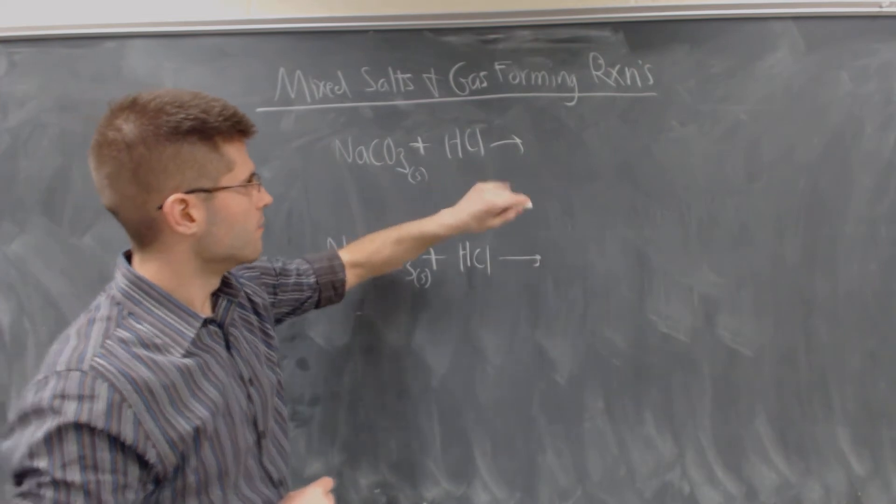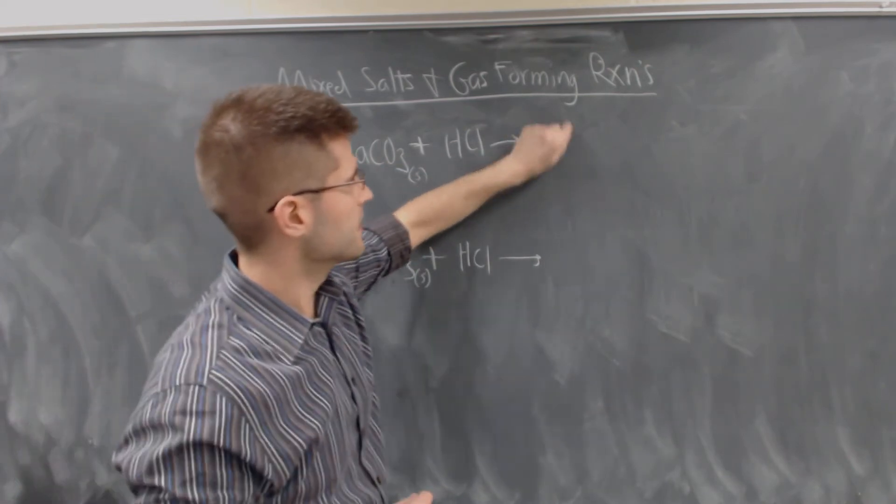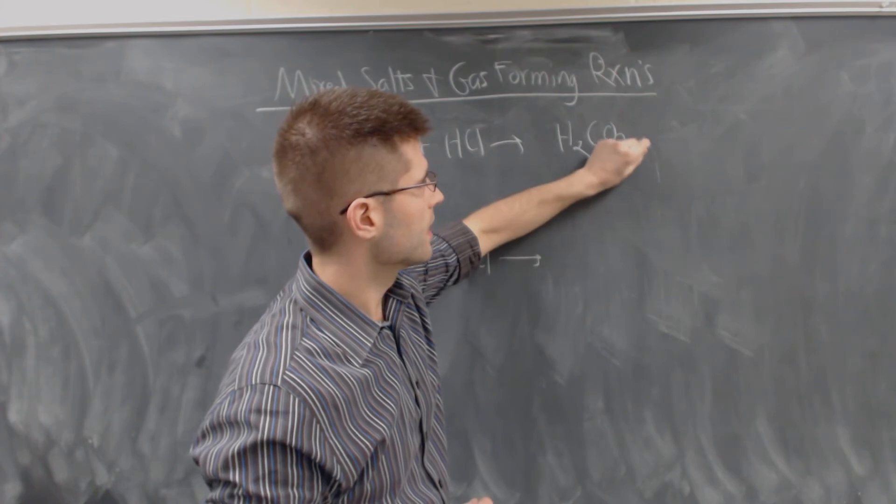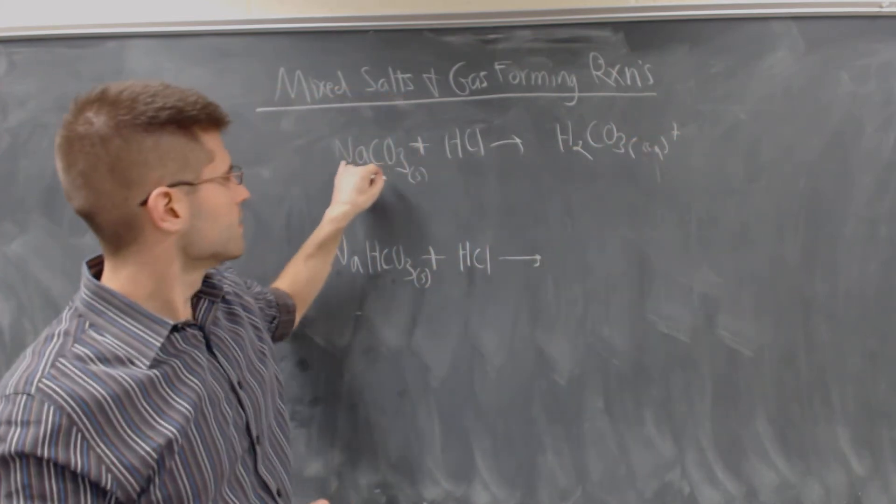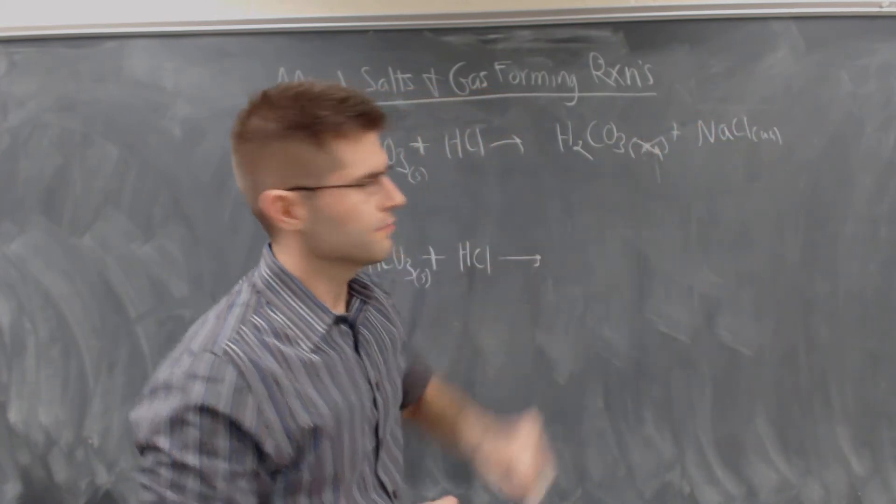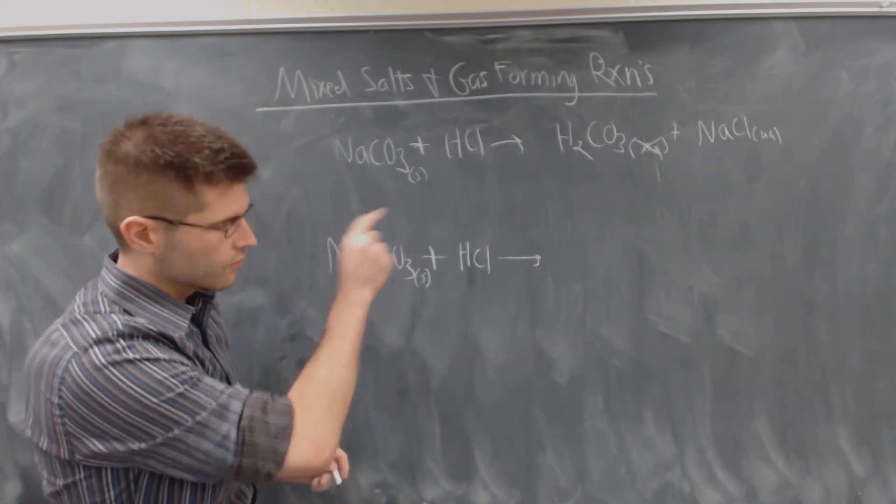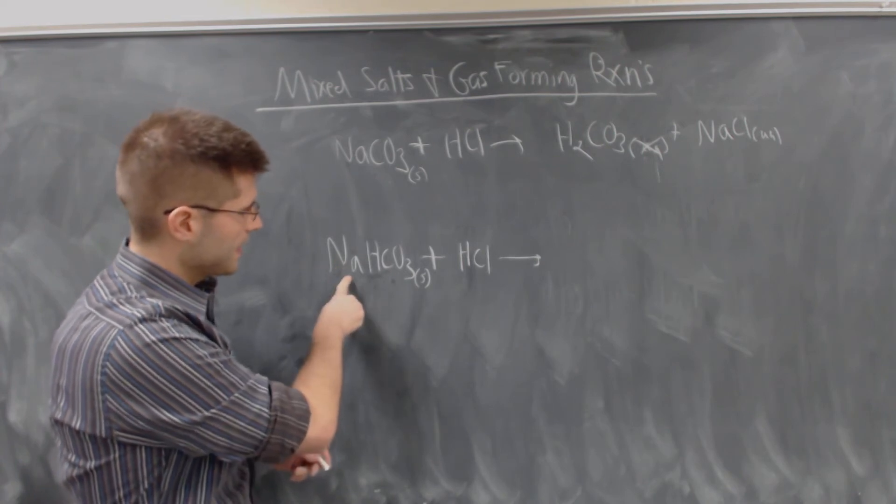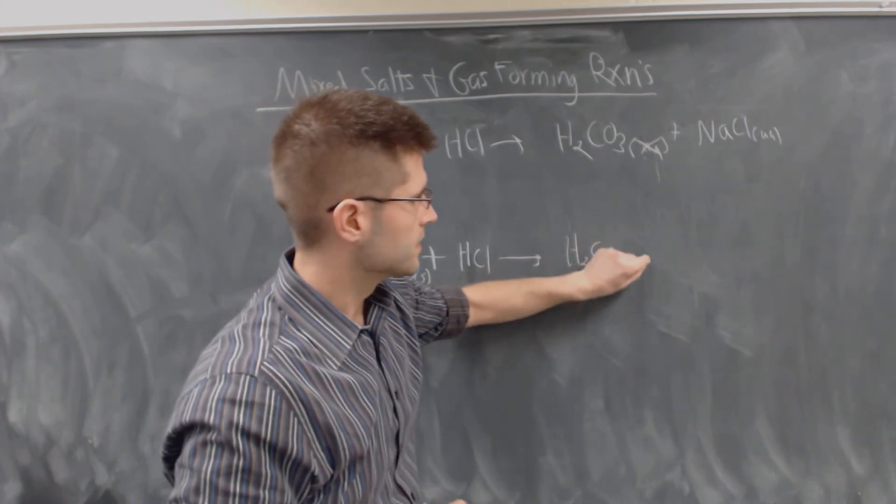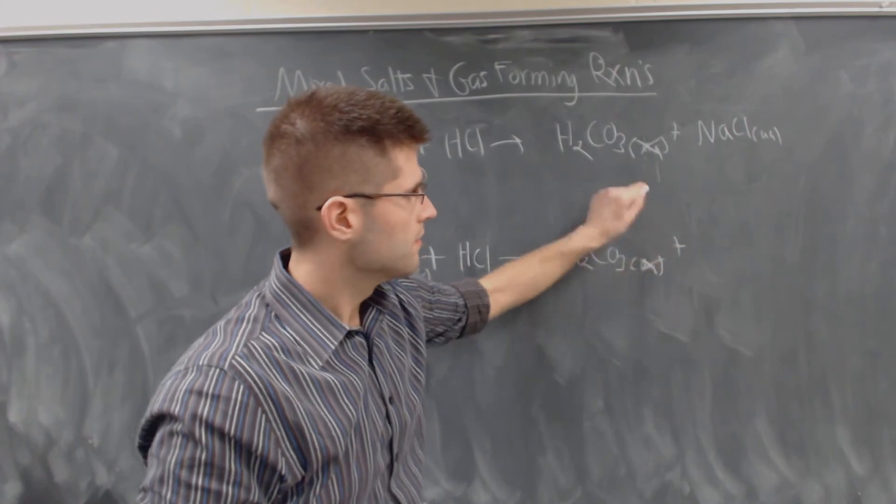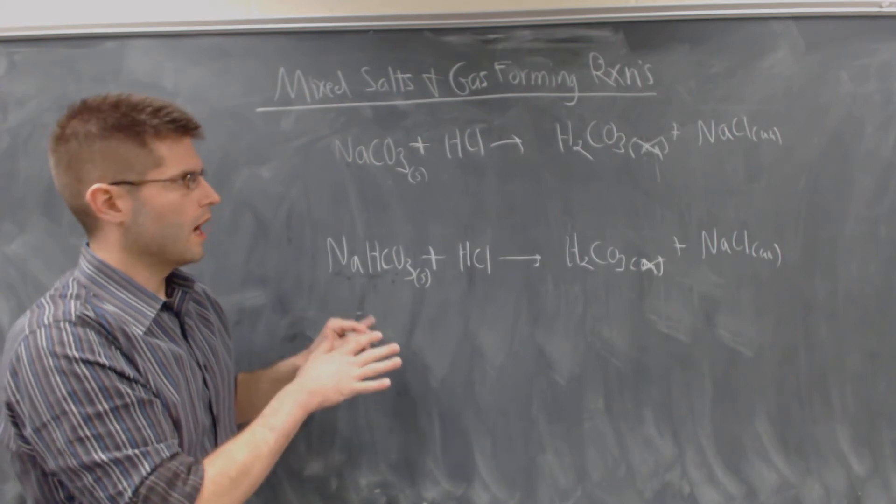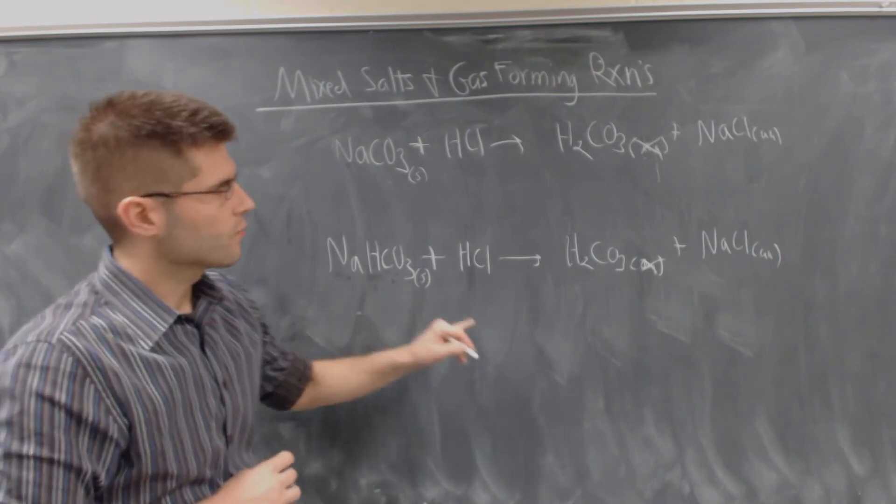If we add HCl to either one of these, what we're going to end up getting is a double displacement reaction. So we'll end up getting H2CO3, which in this case is going to be aqueous, plus the sodium is going to react with the chlorine, NaCl, which is aqueous. Now I'm going to cross this out because it's not truly what forms. So we'll move on. We'll see what happens to that H2CO3. Sodium hydrogen carbonate reacts in the same way. You produce H2CO3, which is going to be aqueous, but we're going to cross that out, plus sodium chloride. You can balance these equations if you need to.